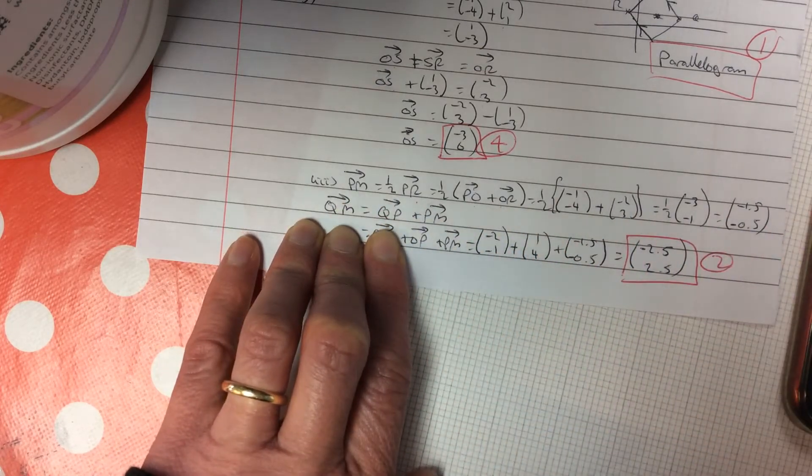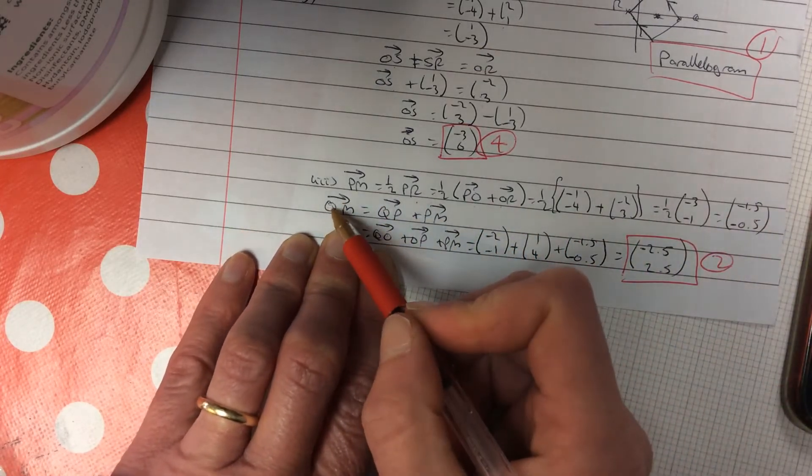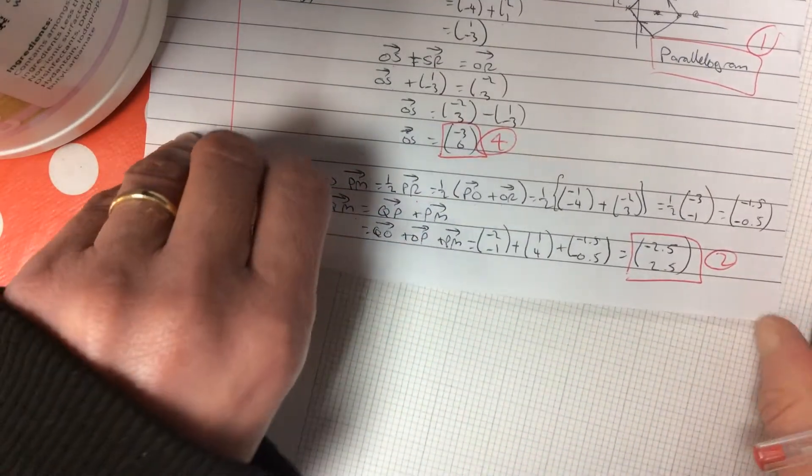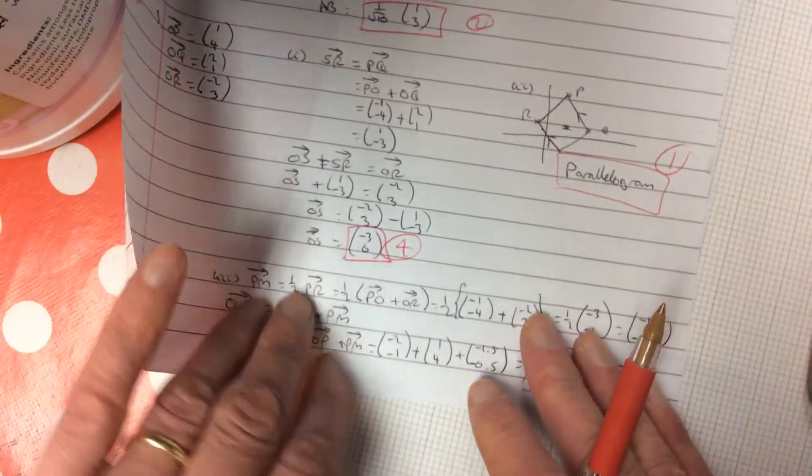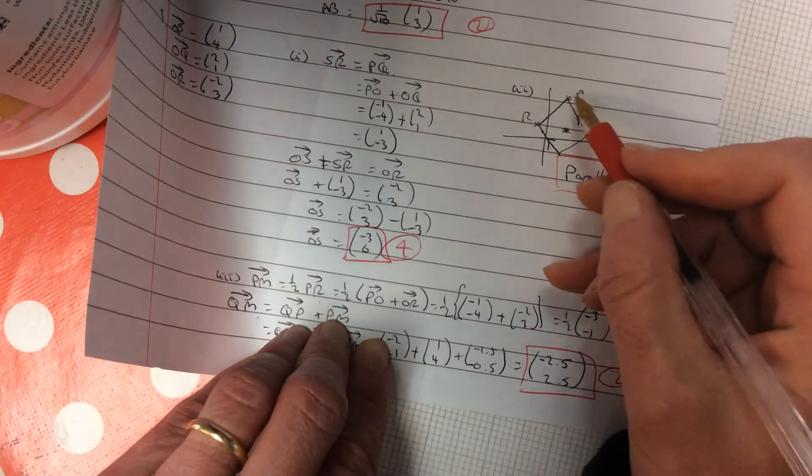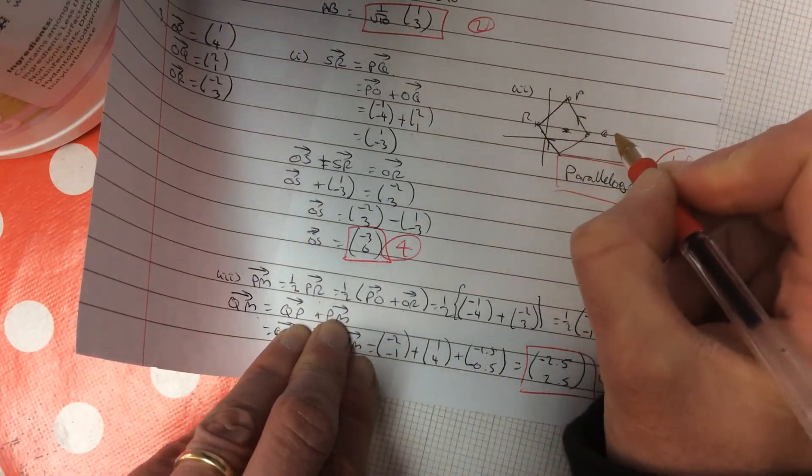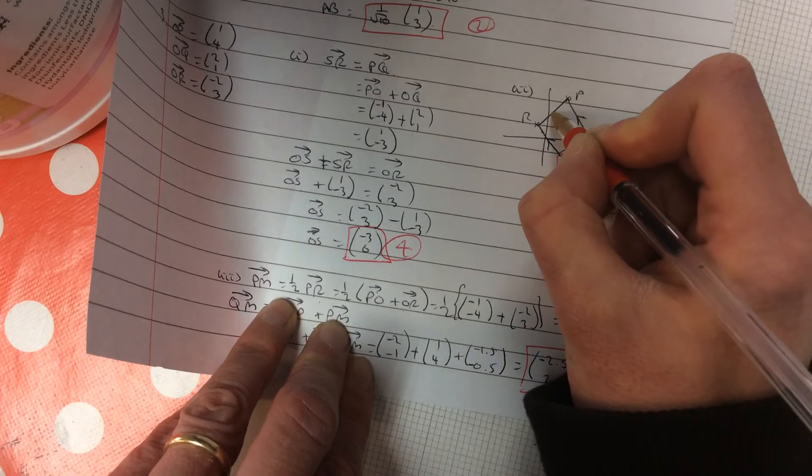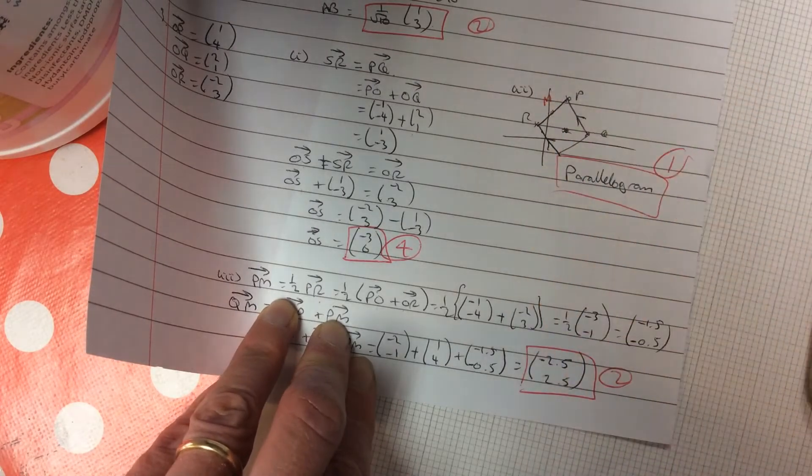Then we have QM. So, QM, if I go back up to my wee diagram here, it might help you sort of picture what's going on there. So, PR, and M is the midpoint.